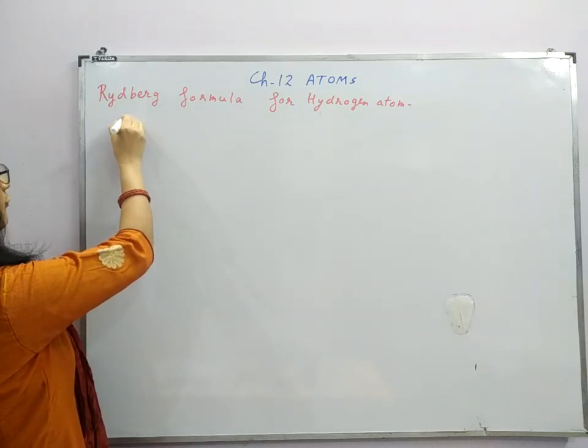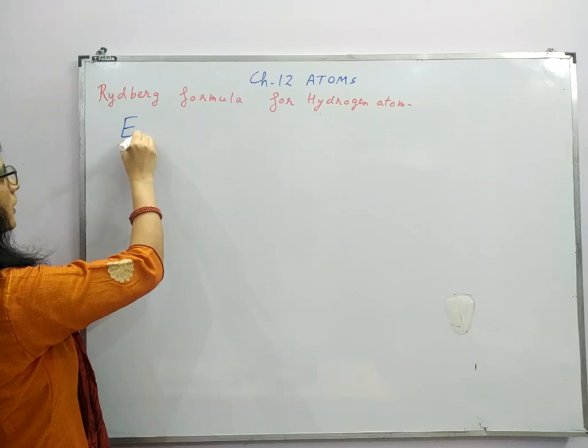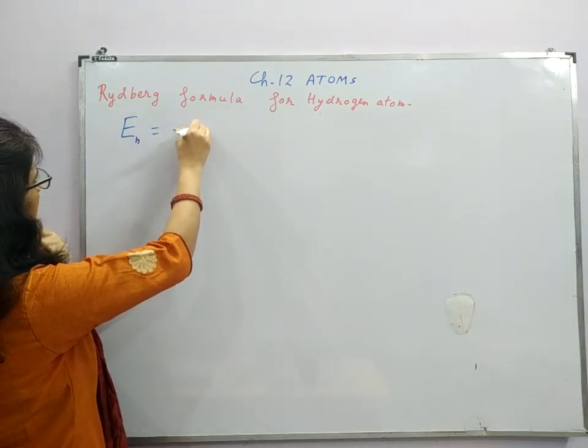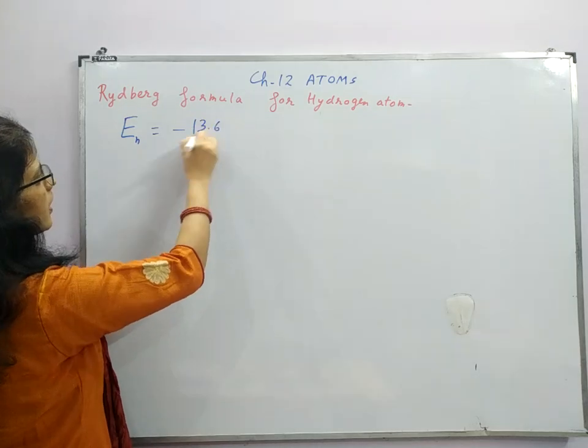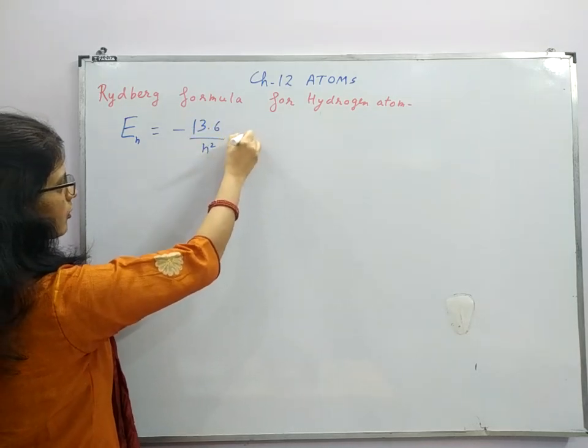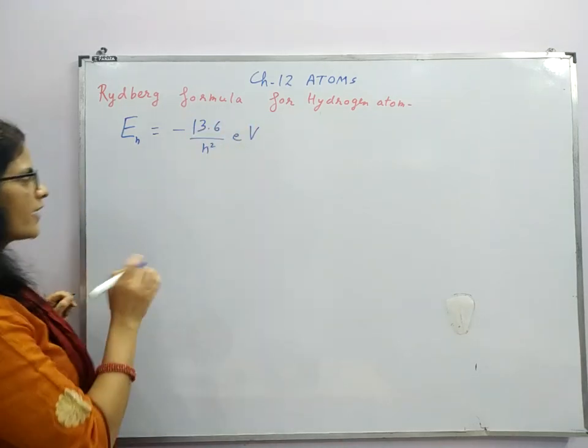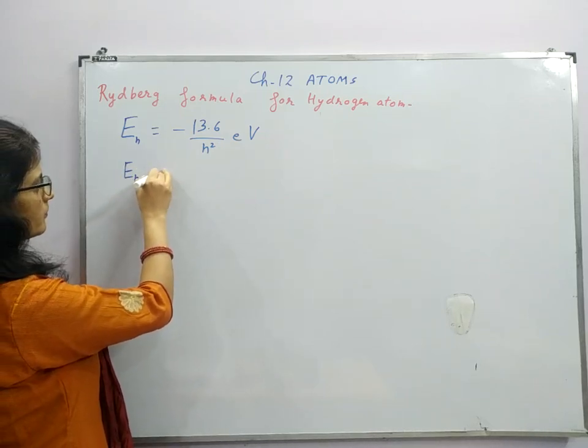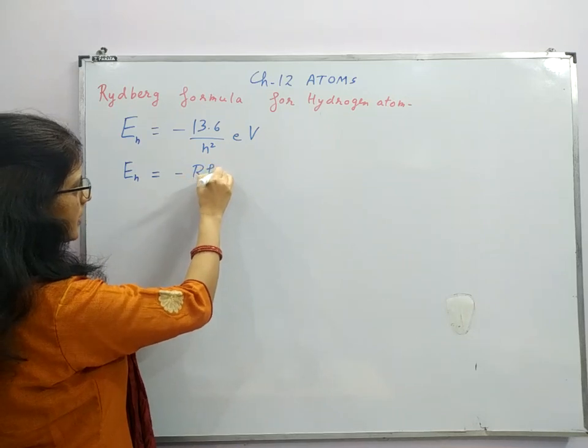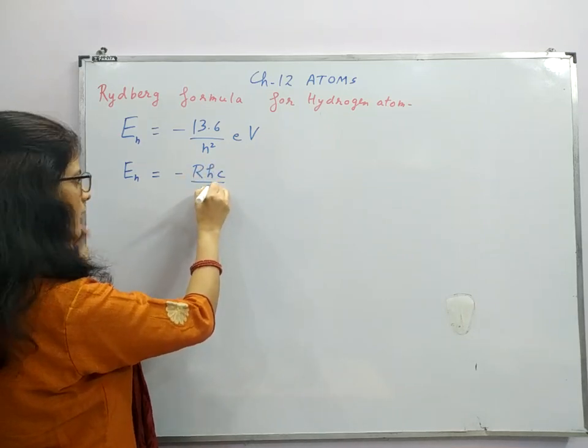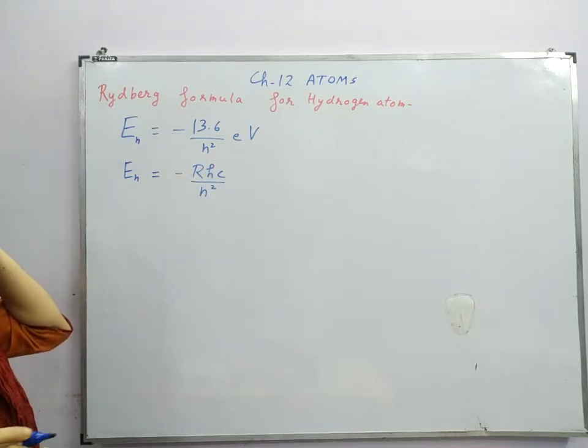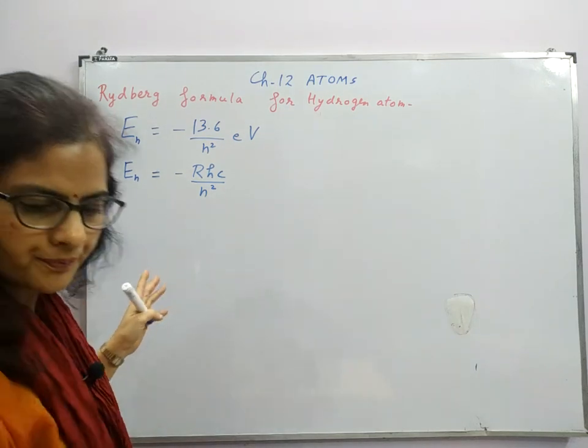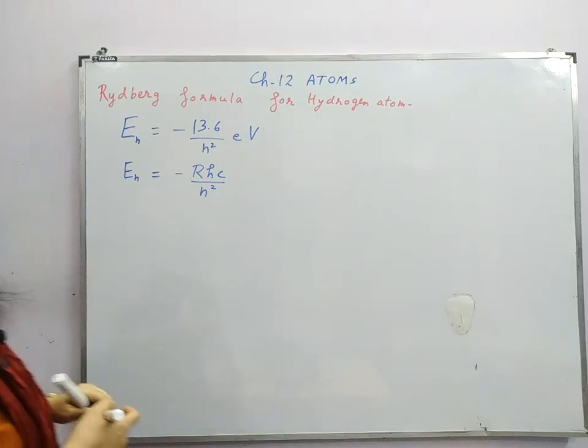That formula for energy in the nth orbit is minus 13.6 upon n square electron volt, and if we write this energy in terms of Rydberg constant, then it will be minus R_h c upon n square. So we will be using this to study the Rydberg formula.